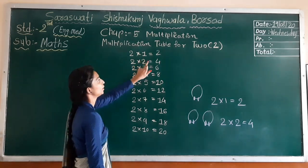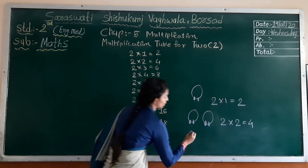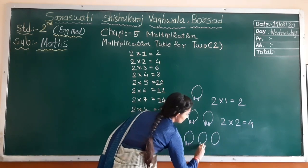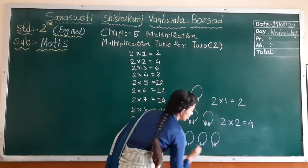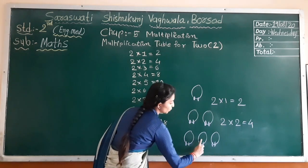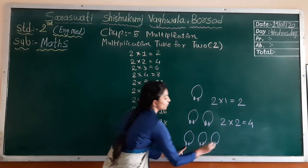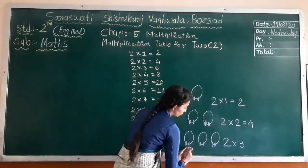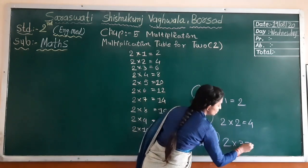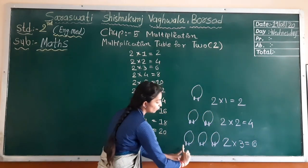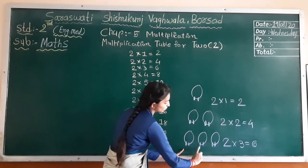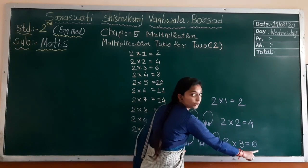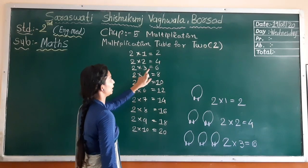Two multiplied by two equal to four. Here I take two mangoes and there are two stones in each mango. Two taken two times, so two multiplied by two equal to four — counting one, two, three, four. Two multiplied by two equal to four. Here I have taken three mangoes, each mango two stones — two multiplied by three. Counting one through six, so two multiplied by three equal to six.